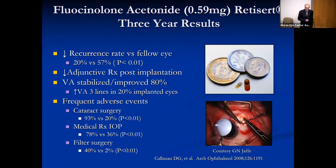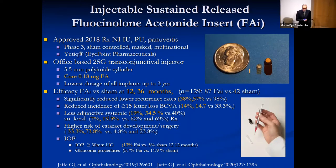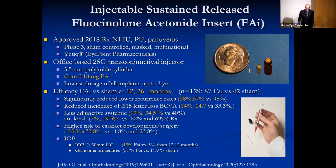Back in 2005, a fluocinolone acetonide implant was approved by the FDA, providing sustained intravitreal steroids for about two-and-a-half to three years, surgically implanted in the operating room. This provides effective anti-inflammatory therapy with improvement of visual acuity, but adverse effects include cataract in 100% of eyes and a very high percentage of elevated intraocular pressure requiring incisional glaucoma surgery. In 2018, a variation — the fluocinolone insert — was approved by the FDA as an office-based injection at a lower dose, shown to have efficacy versus sham at 12 and 36 months, with fewer adverse effects.